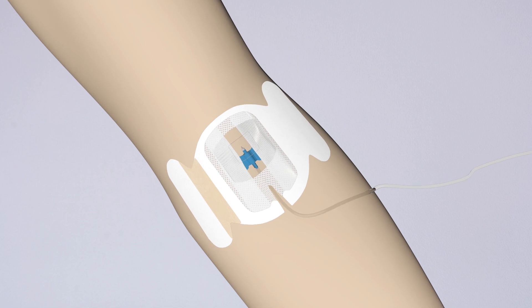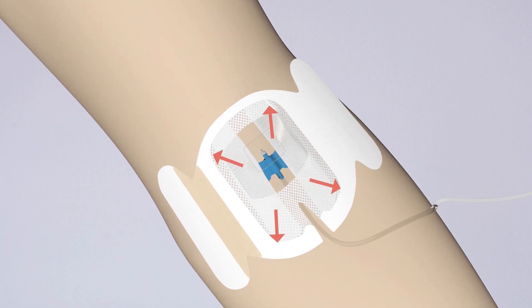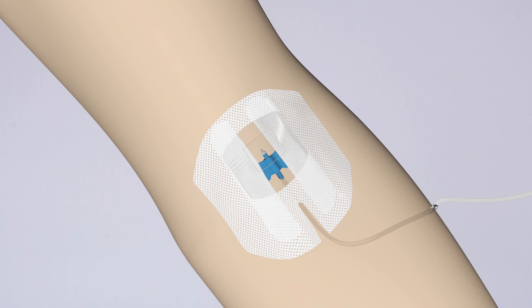5. Smooth down the dressing from the centre toward the edges. 6. Slowly peel off the paper frame, while smoothing down the dressing edges with your fingertips.